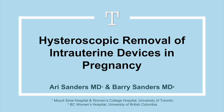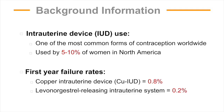We present a video on the hysteroscopic removal of intrauterine devices in pregnancy. Intrauterine devices are a common form of contraception. While pregnancy is uncommon, first-year failure rates are 0.8% for the copper IUD and 0.2% for the levonorgestrel-releasing intrauterine system.